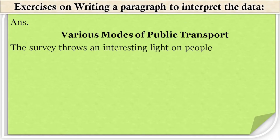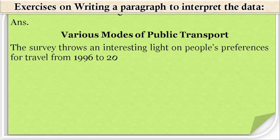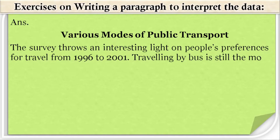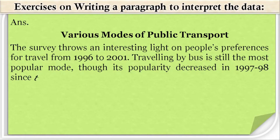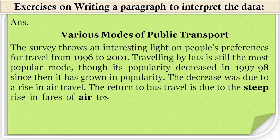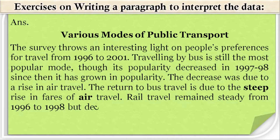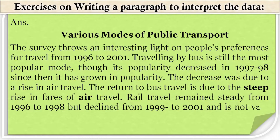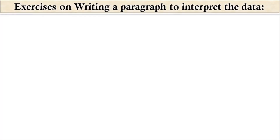The title of the paragraph is 'Various Modes of Public Transport.' The survey throws an interesting light on people's preferences for travel from 1996 to 2001. Traveling by bus is still the most popular mode, though its popularity decreased in 1997 to 1998; since then it has grown. The decrease was due to a rise in air travel. The return to bus travel is due to the steep rise in the cost of air travel. Rail travel remained steady from 1996 to 1998 but declined from 1999 to 2001 and is not very popular.